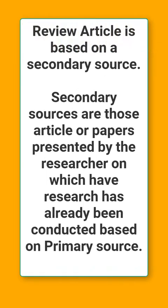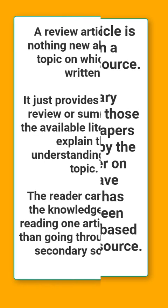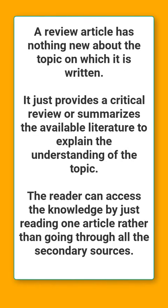A review article is based on a secondary source. Secondary sources are those articles or papers presented by researchers on which research has already been conducted based on a primary source. A review article has nothing new about the topic on which it is written and it just provides a critical review or summarizes the available literature to explain the understanding of the topic. The reader can access the knowledge just by reading one article rather than going through all the secondary sources.